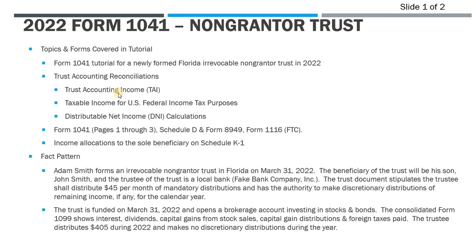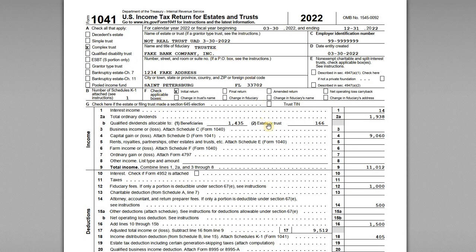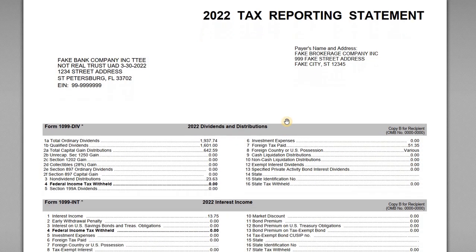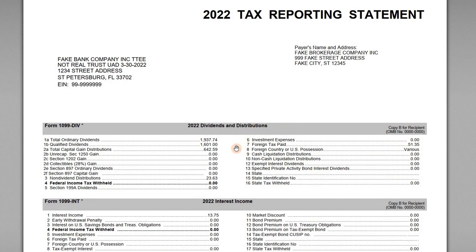We have two slides as a summary of the things we're going to talk about — the fact pattern and some important rules as an intro — and then we also have the sample Form 1041 that we'll walk through. This is a 1041 for a complex trust for 2022. We'll go through the 1041 and all the relevant schedules, and then I do have a sample consolidated 1099 for the trust showing the income items we're going to report.